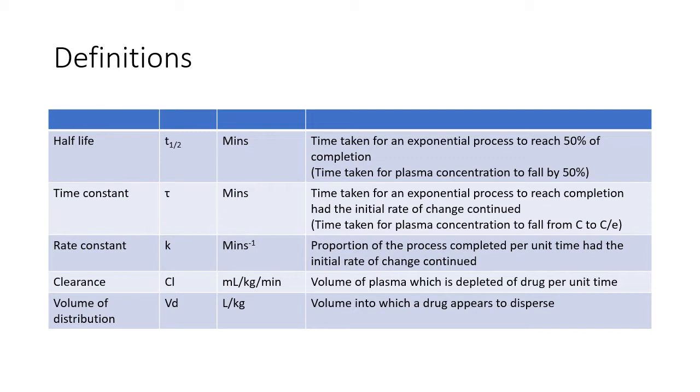Time constant is the time taken for an exponential process to reach completion had the initial rate of change continued. Rate constant is the proportion of the process completed per unit time had the initial rate of change continued.